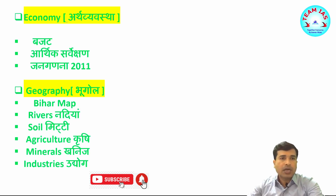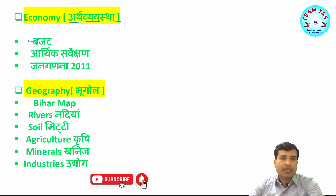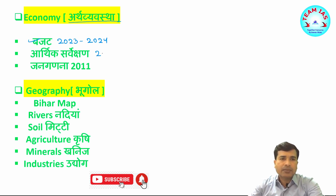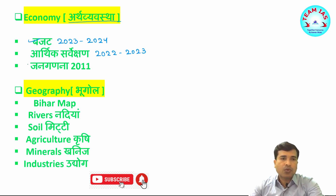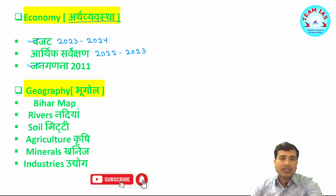Then if we talk about arth vyavastha Bihar ke sandarbh mein, toh teen topics jahaan se sawaal ki certainty almost ban jaati hai. Pahela hai Bihar ka budget, jo ki 2023-2024 ka budget ho gaya, isko dekh lijiyega, chhota portion hai. Arthik sarvekshan ki baat karein toh 2022-2023 Bihar ka dekh jaiyega, ismein bhi zyaada points nahi hain. Aur Janaganna 2011 ko ek baar dekh lijiyega — facts hain. Exam ke pehle isko zaroor dekhiyega, chunki facts aise hote hain jo it's not easy to remember, isliye ek baar isko scan kar jaiyega.